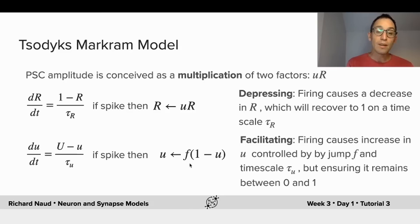And the release probability also evolves with linear dynamics, and can also change whenever a presynaptic spike comes. It will normally increase by an amount that is controlled by the parameter f, and together these two effects can create depression, facilitation, or a combination of both. And you can get these different phenotypes by changing the parameters, the timescales, and the amount of change that there is upon spiking.